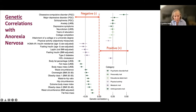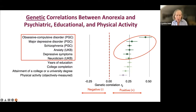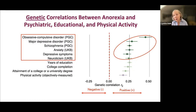In the genetic correlations graph, zero is the center line. Anything to the right is a positive genetic correlation — the same genes increase risk for both traits. On the left is negative genetic correlation — the same genes that increase risk for anorexia may decrease risk for traits on that side. Starting with psychiatric, educational, and physical activity phenotypes: we see very strong positive genetic correlations with obsessive compulsive disorder, major depressive disorder, schizophrenia, anxiety, and neuroticism. This mirrors what we see in the clinic and gives a genetic reason for why we see these disorders together — especially OCD, which shows the strongest genetic correlation with anorexia nervosa.